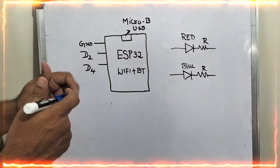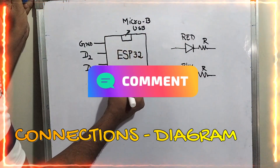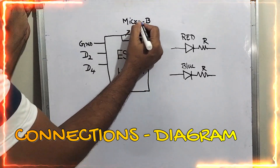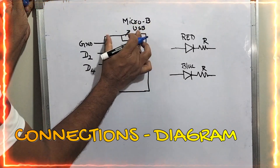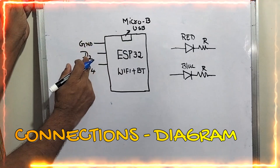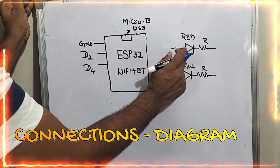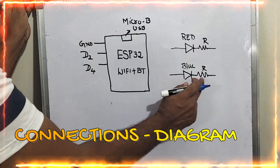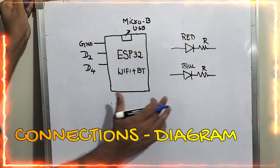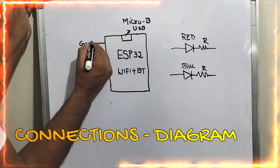Now let us see the live connection. The ESP32 with its Wi-Fi and Bluetooth module has the micro USB on the top side. On my left-hand side you can see the ground, D2, and D4. On the right-hand side you can see the red LED with resistor and blue LED with resistor. Now we need to complete the wiring diagram.